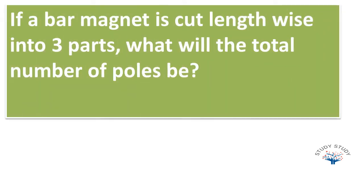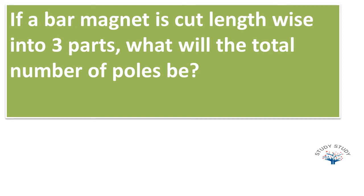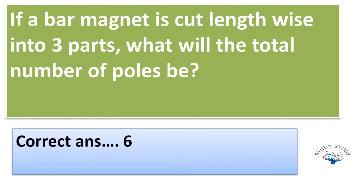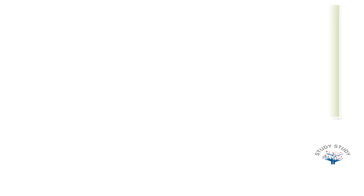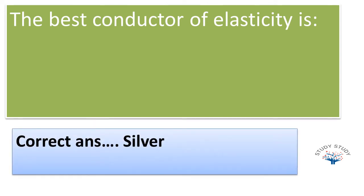If a bar magnet is cut lengthwise into three parts, what will be the total number of poles be? The correct answer is six. Next, the best conductor of electricity is - the correct answer is silver.